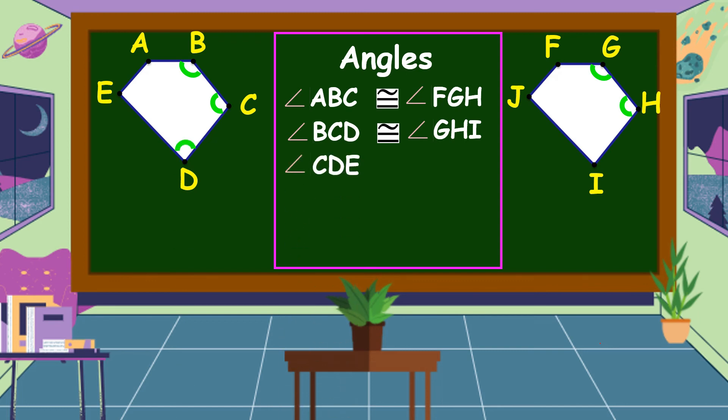Angle CDE is congruent to angle HIJ. Angle DEA is congruent to angle IJF. Lastly, angle EAB is congruent to angle JFG.